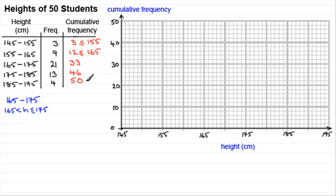Now we need to plot our points on. We start with this point here. We start with three and three values are less than or equal to 155. So we need to come up to the 155 and go to three. Well, they're going up in units of two here, so that will be three there. And we always plot this one here. We've got the bottom, the lower limit here, 145. We know that nothing is, there's no students less than 145 centimeters. So we can put a point there.